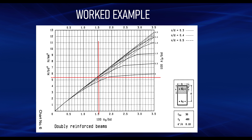The chart is always arranged like this: m over bd² on the left-hand vertical axis, the area of tension reinforcement along the horizontal axis at the bottom, and the area of compression reinforcement along the right-hand vertical axis. Our parameters align with chart number 6: fcu is 30, fy is 460, and d' over d is 0.1. We want to calculate the tension reinforcement As and compression reinforcement As' for this doubly reinforced beam.